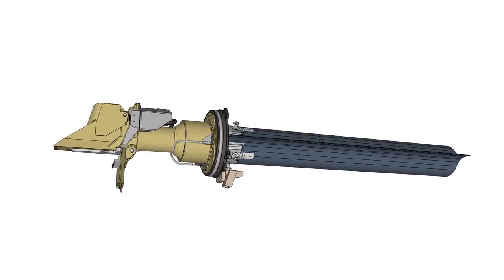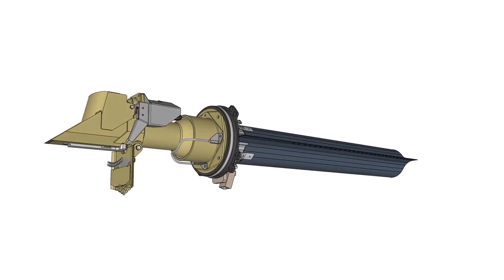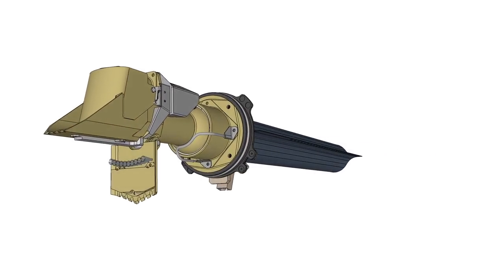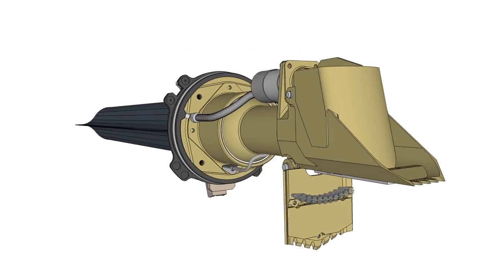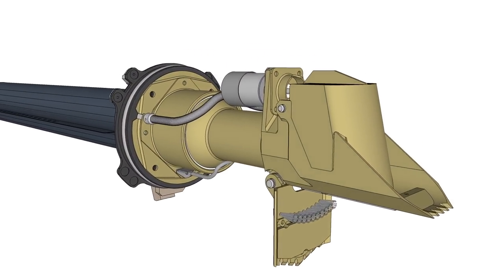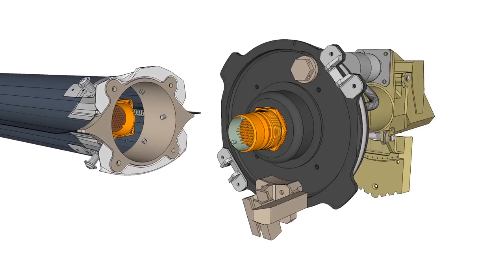The extensible boom allows the collector head to reach from the lander down to the Mars surface. The boom must be strong enough to push the collector head into soils across a range of cohesion or shear strength. The boom can extend about ten feet, only a portion of which is seen here.